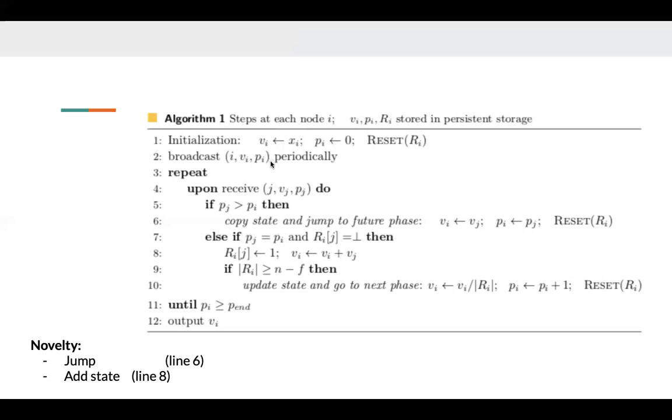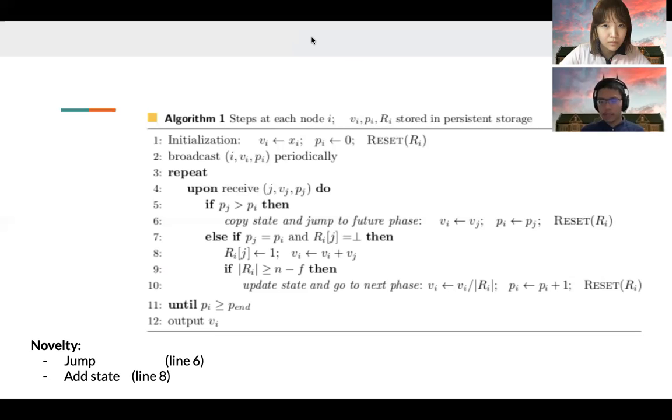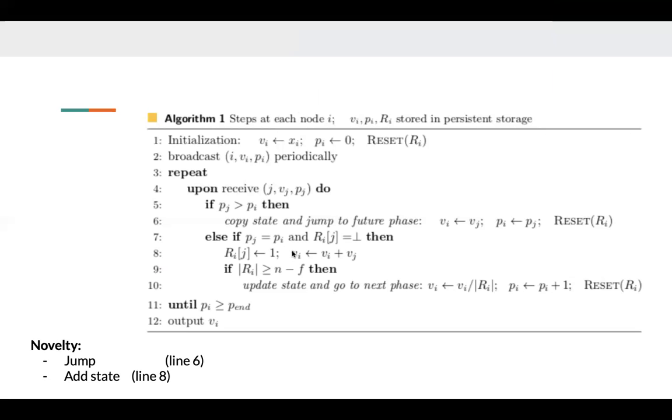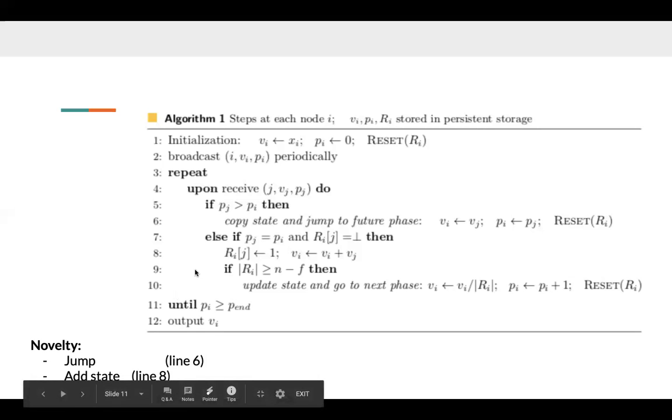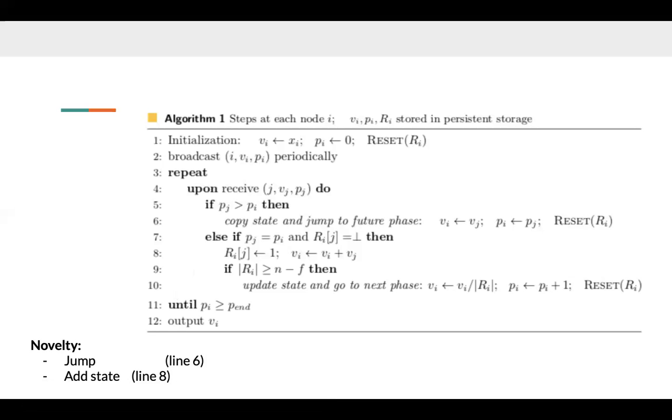Although the intuition behind our algorithm is simply aggregating and averaging all received messages, there are two novel differences between our algorithm and previous ones. First, our algorithm allows each node to directly jump to a future state if it receives a message in a higher phase. The reason why each node can simply copy a future state is that the local states in higher phases must fall in a narrower range, and we will prove it later. The phase jumping process also solves the potential problem that the phase gap between any two nodes might be arbitrarily large due to the asynchronous setup, and this might also potentially speed up our algorithm.